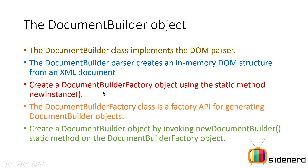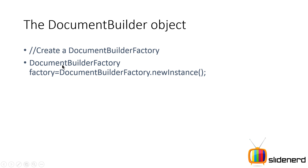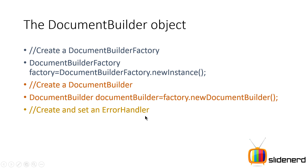It works in two steps: first create a factory, then using the factory create a DocumentBuilder. In code: create a DocumentBuilderFactory by calling DocumentBuilderFactory.newInstance() — notice the static method, no constructors, no new keyword. Then use that factory object to call factory.newDocumentBuilder() — again, no constructors, a single DocumentBuilder object is given to you. You also need to set an error handler, as discussed.